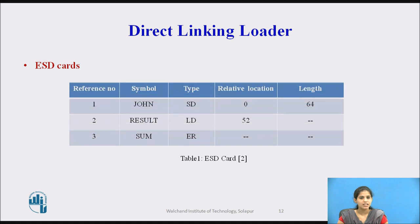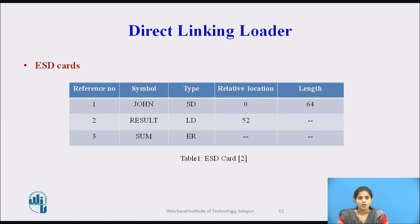Three ESD cards are needed for program John. The first card contains the name John with type SD (segment definition), relative address 0, and program length 64. The next ESD card contains the symbol result, which is a local definition with relative address 52. The final ESD card specifies that the symbol sum is an external reference.